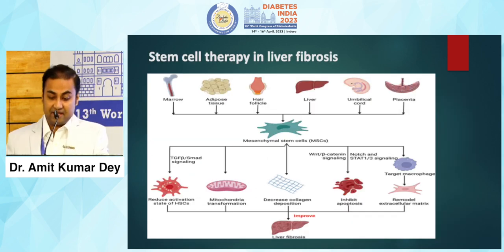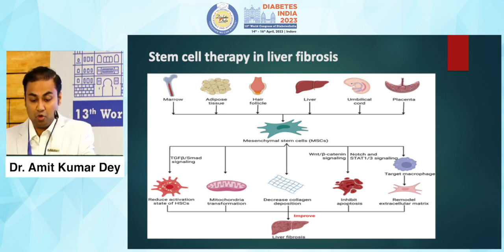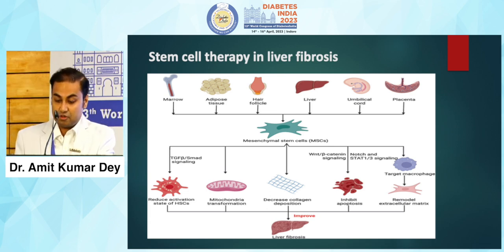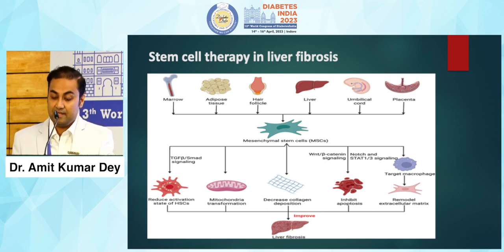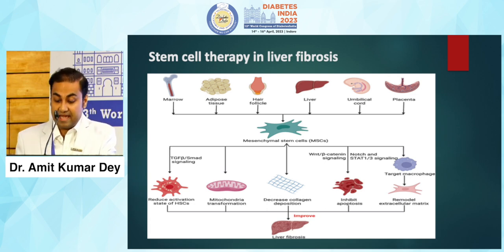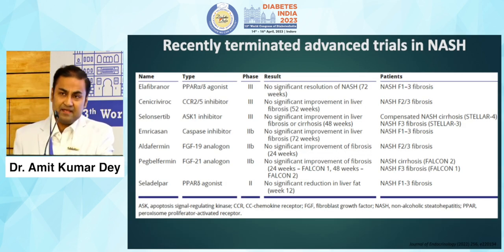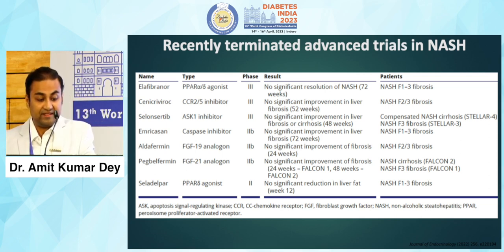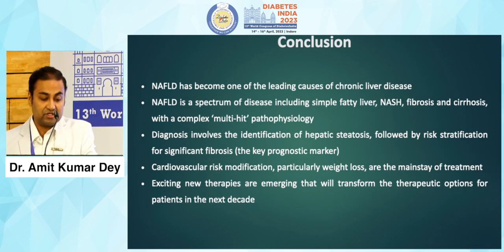Finally, regarding stem cell therapy: mesenchymal stem cells isolated from different sources including the umbilical cord, bone marrow, placental adipose tissue, and placental hair follicle are being evaluated to improve liver fibrosis. The impact of mesenchymal stem cell therapy would be to reduce HSC activation in patients with extensive liver fibrosis. Some trials were already underway but were terminated because no significant outcomes were found, though research is still ongoing.